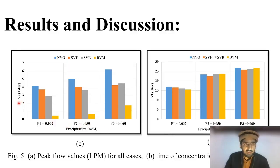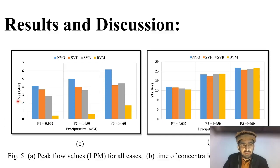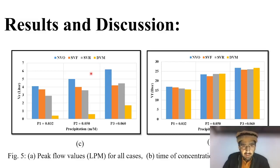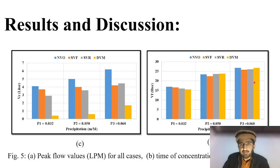The volume of the rising limb and falling limb were analyzed in relation to precipitation. The volume for the rising limb was minimum for the maximum vegetation condition (double vegetation mix, shown in light blue). For the falling limb volume, there was not a large difference between conditions, but there was still a slight reduction, with no vegetation being slightly higher than the maximum vegetation condition.